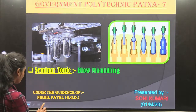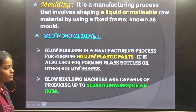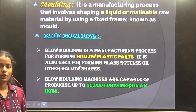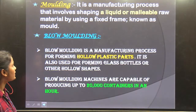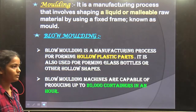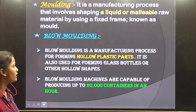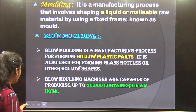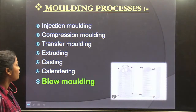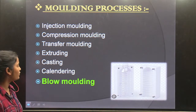We will talk about Blow Molding. Basically, Blow Molding is a manufacturing process in which we use liquid and labeled raw materials in a fixed frame to manufacture the same shape. The fixed frame is basically a mold. Blow Molding has many types of materials, and we have 7 types of molding.